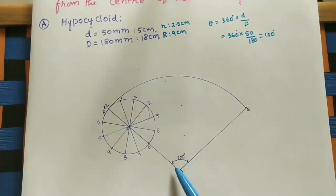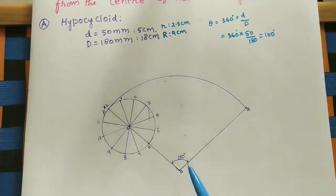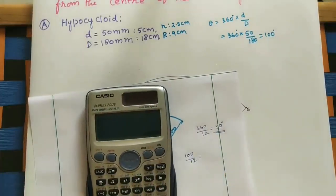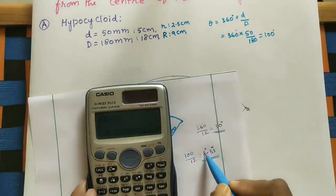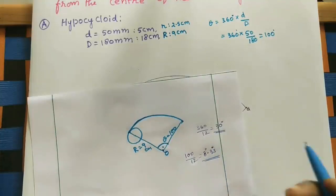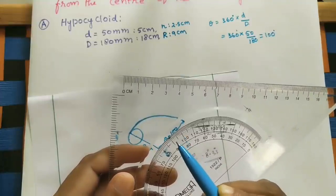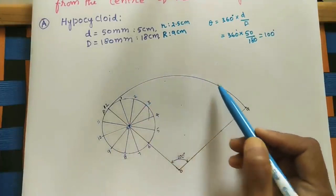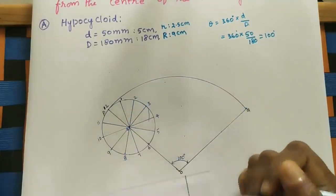Now divide the 100-degree arc into 12 equal divisions. Each part = 100 ÷ 12 ≈ 8.333 degrees. Since 8.3 degrees is difficult to mark precisely with a protractor, we use the trial and error method. Initially mark approximately 8 degrees, then add a small additional distance to approximate 8.3 degrees.